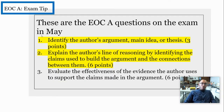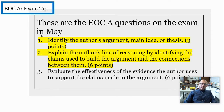This is how the wording actually appears on the College Board when they give you the question. This wording will always stay the same — the reading will change. Number one: identify the author's argument, main idea, or thesis — we can just take that as main idea. Number two: explain the author's line of reasoning by identifying the claims used to build the argument and the connections between those claims.